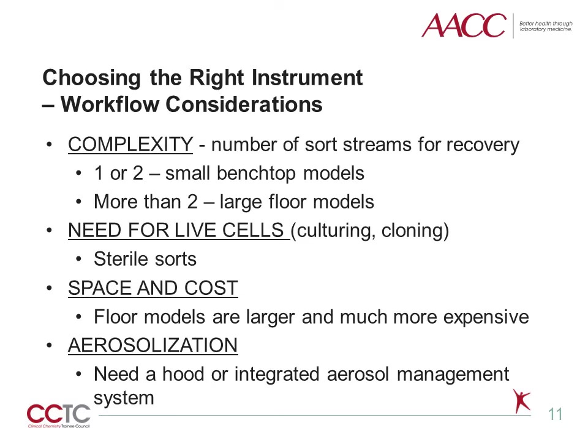There are some important things to keep in mind when purchasing or seeking a FACs instrument. Foremost is the complexity and intended use of the sorted cells. If the goal is to sort one or two cell populations, such as T and myeloid cells, a benchtop model with two sort streams and four to five color capabilities is sufficient. If there is a need for multiple cell populations—for example, naive, memory, and effector subsets of T or B cells—then a larger floor model with multiple sort streams and multiple fluorescent channels will be necessary. If culturing or cloning the cells after sorting is the objective, the sorter will need the capability of performing sterile sorts. Some sorters can hold sample and collection tubes between 4 and 37 degrees. A floor model with four sort streams takes up twice the floor space and may cost twice as much as a benchtop model.